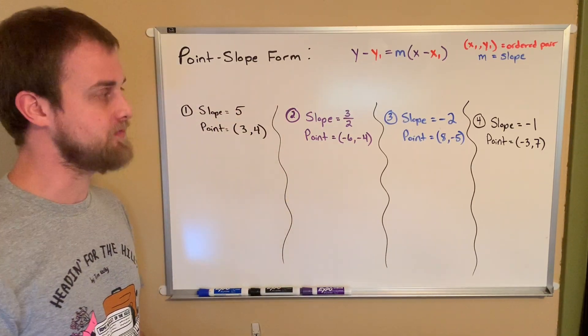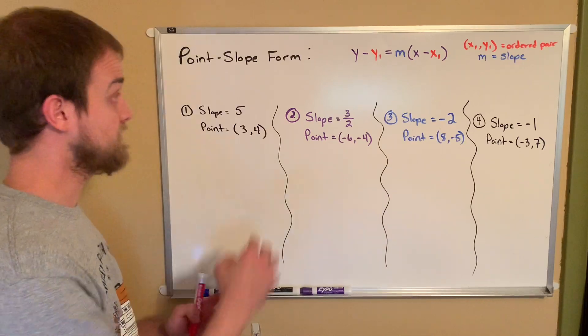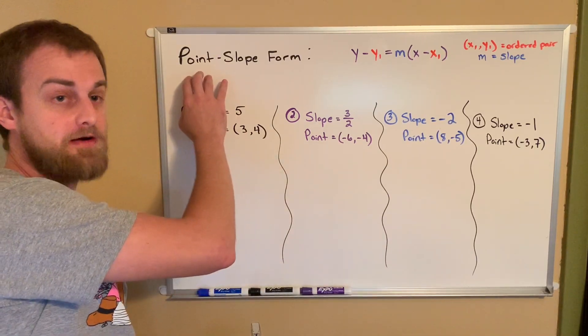And what point-slope form does is it tells us two pieces of information: a point, or an ordered pair, and the slope.